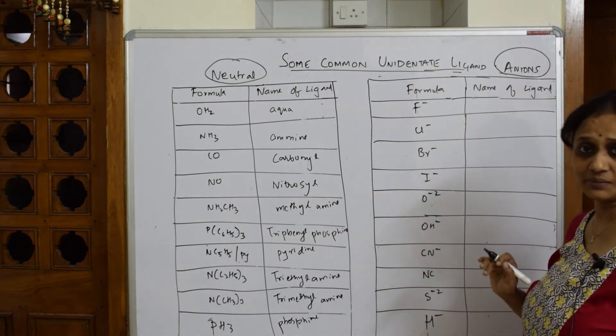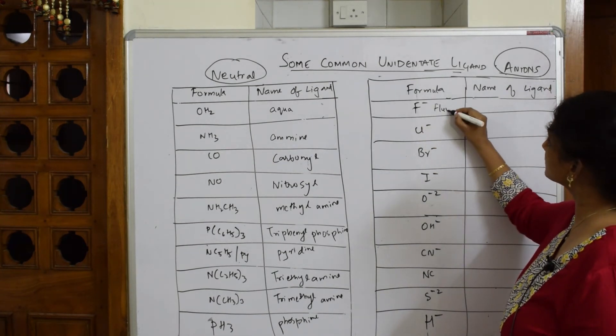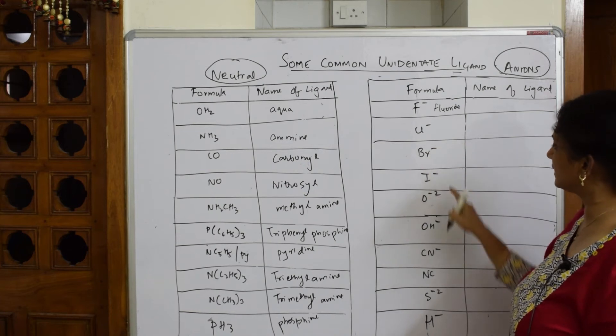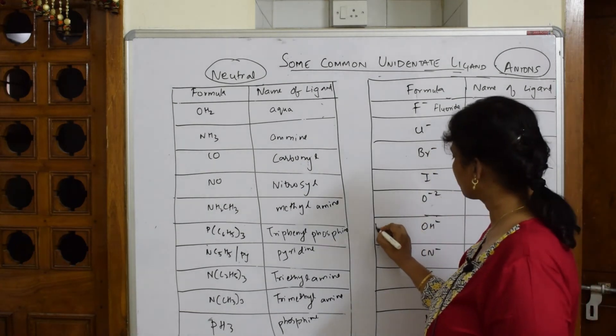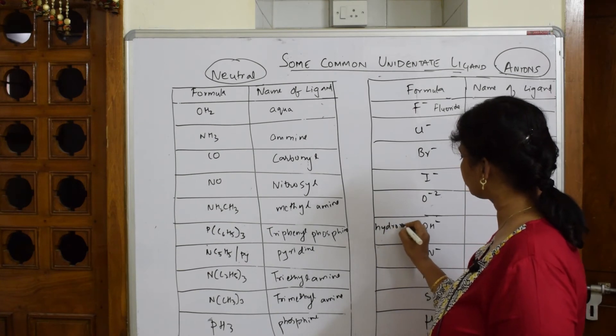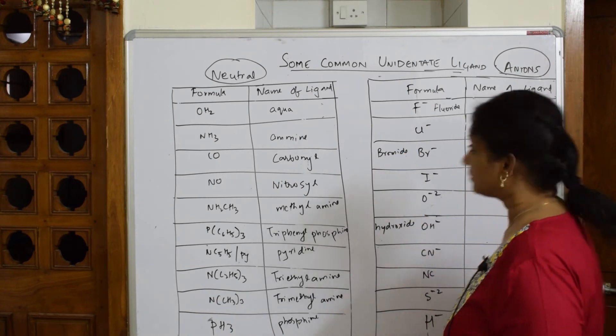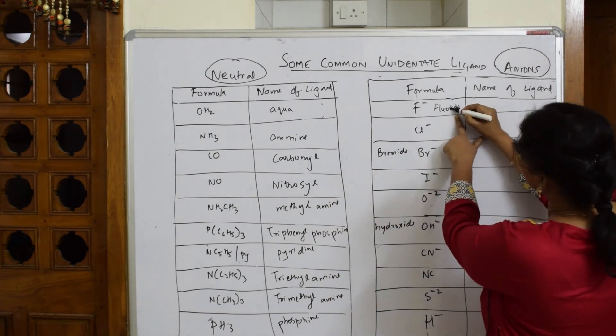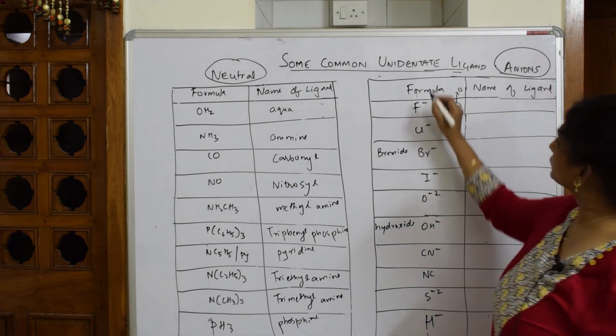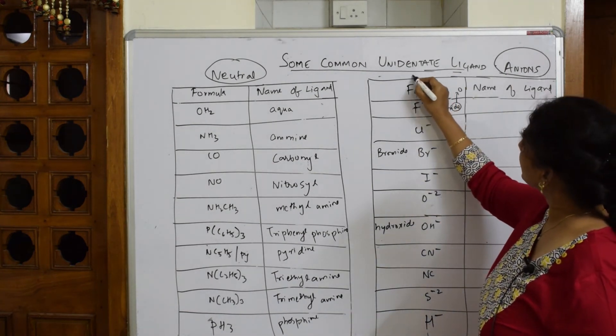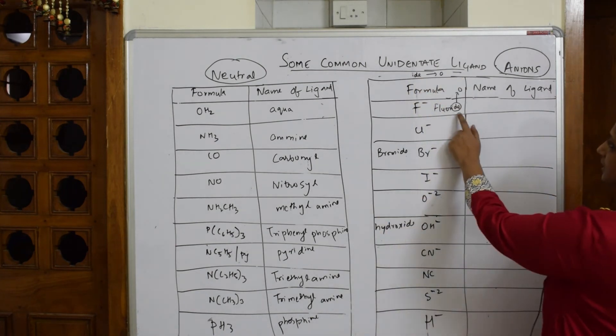Now when I come to anionic ligand, observe carefully. This is fluoride, basically chloride, bromide, iodide, oxide, hydroxide. Let us write this also—hydroxide, bromide. I'm not writing this in detail, but remember: for anionic ligand, -ide is replaced by -o.